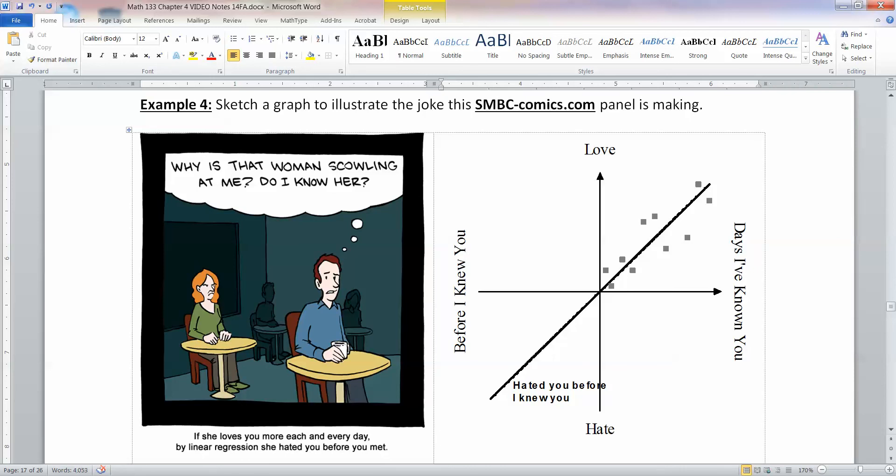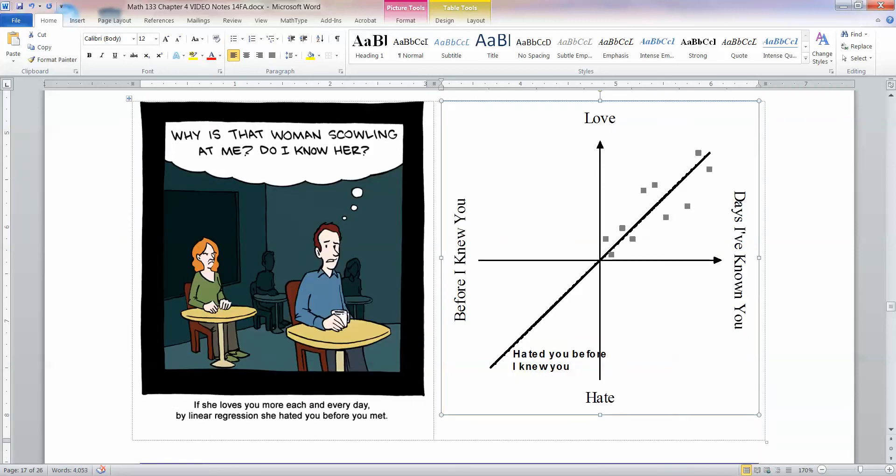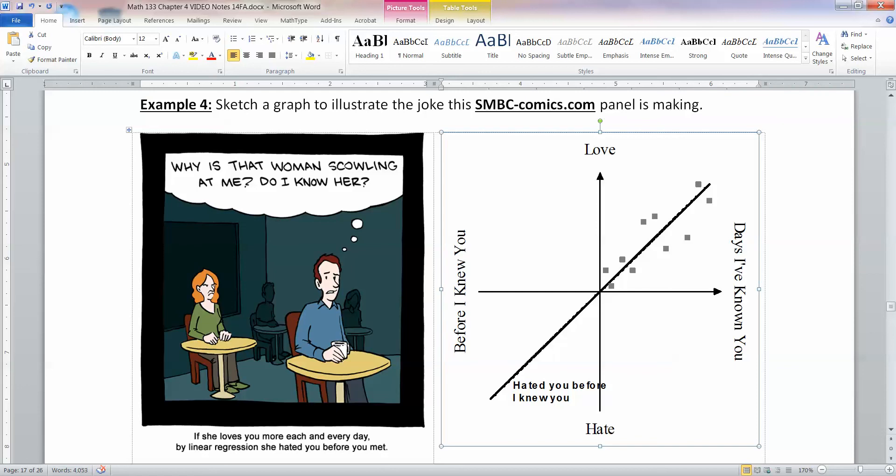So some days you love them more than others and you make a little graph. Like I love them at one. I love them at zero. I love them at three. I love them at two, et cetera, and you move your way on. So if that's the case and you love them more and more every day, then it's going to be a positive relationship, a positive linear relationship. So then what happened before you knew them? If it's a positive linear relationship, then back before you knew them, it kind of goes down into this negative zone, which is on the hate spectrum. Because if love is up here at the top and hate is down here at the bottom. So it's kind of making a joke about being outside the scope of the model. If you go too far back in the past, she hated you. But of course it's impossible because she didn't really know you. So it's making a joke about being a little too far outside of the scope of your model.